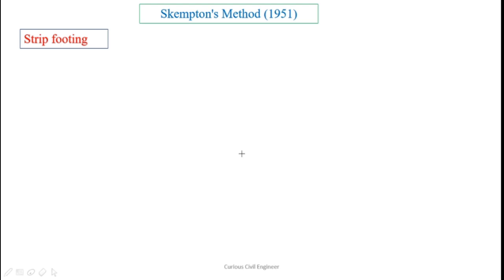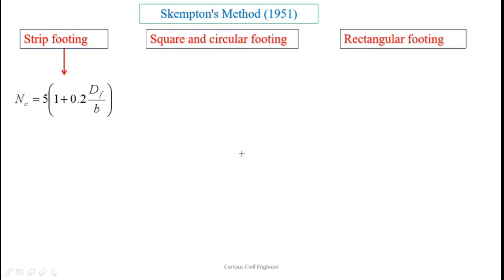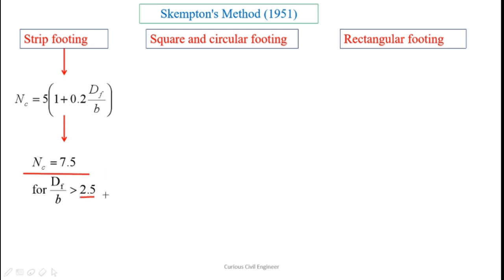One important thing about Skempton's method is that the value of nc does not depend upon the value of phi. In Terzaghi's method, nc, nq, and n-gamma depend upon phi. But here nc depends upon the value of df/b and the shape of the footing. For strip footing, nc is given by a specific formula, and its value is restricted to 7.5 for df/b greater than 2.5 — if the ratio exceeds 2.5, simply use nc equals 7.5.